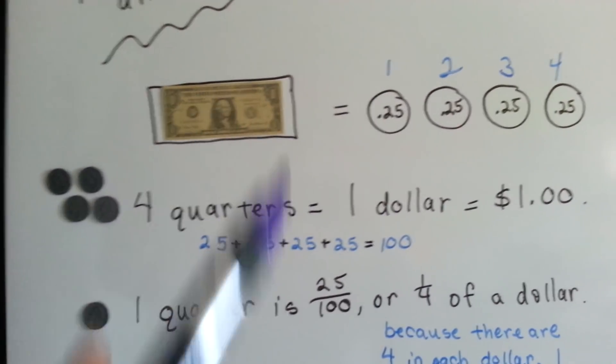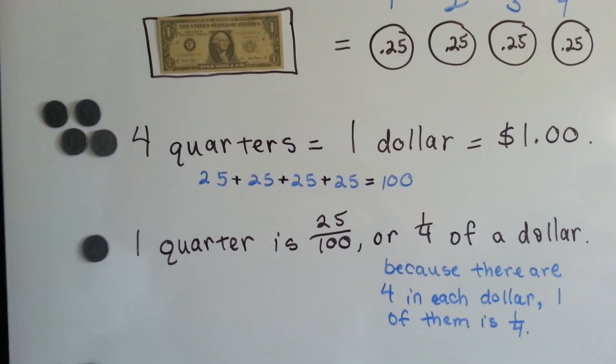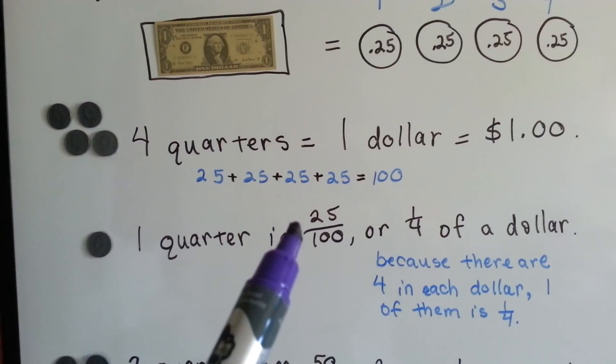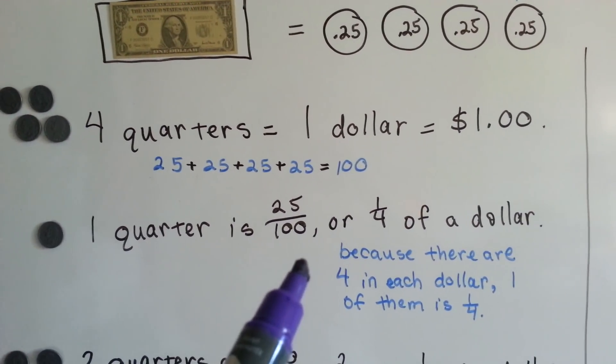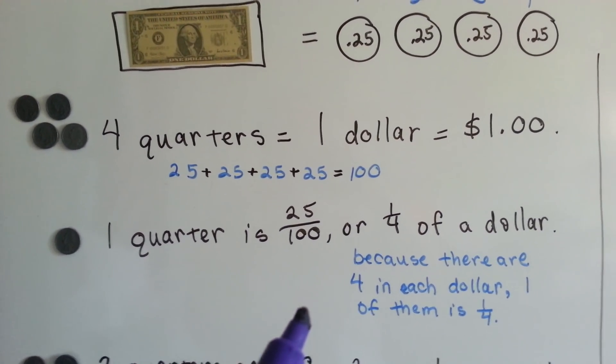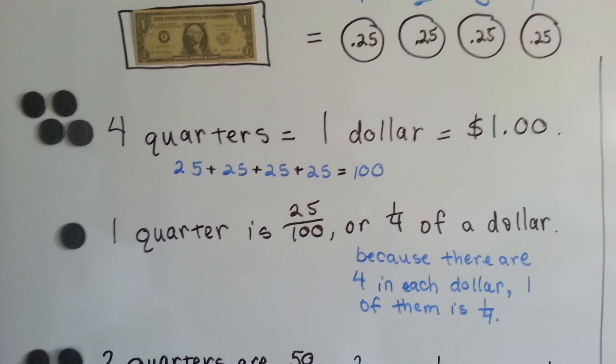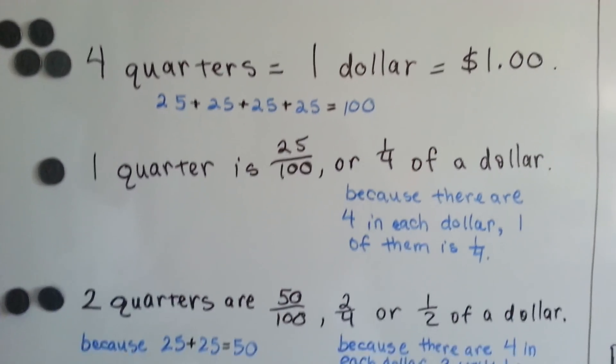When we have two of them, we have half of a dollar. One quarter is 25 one-hundredths, or one-fourth of a dollar, because there are four quarters in each dollar. One of them is one-fourth. That makes sense, right?